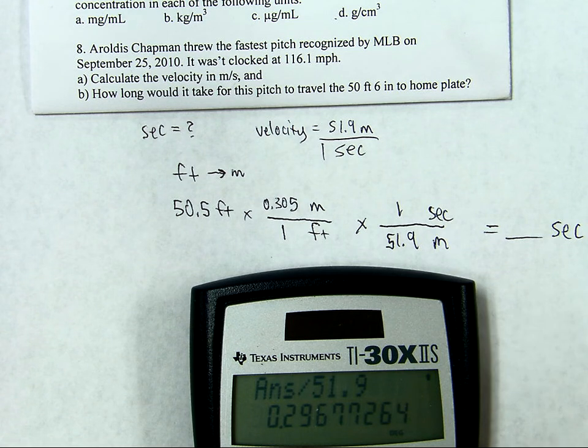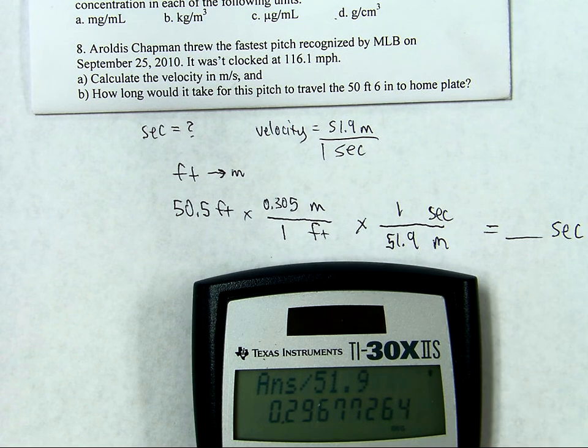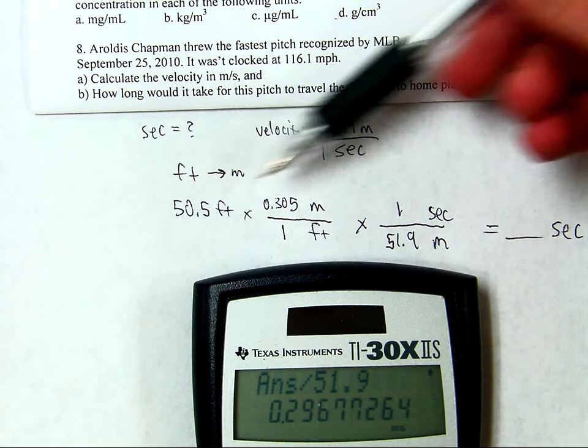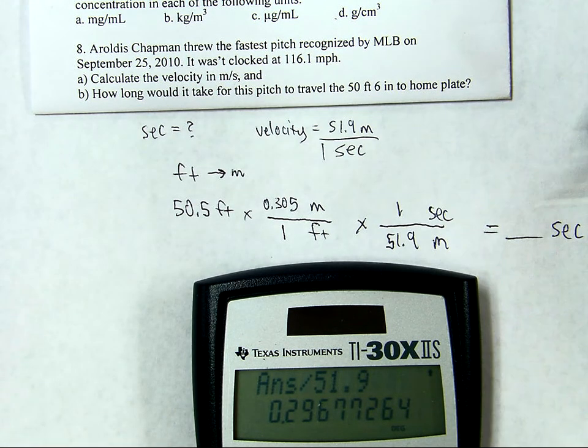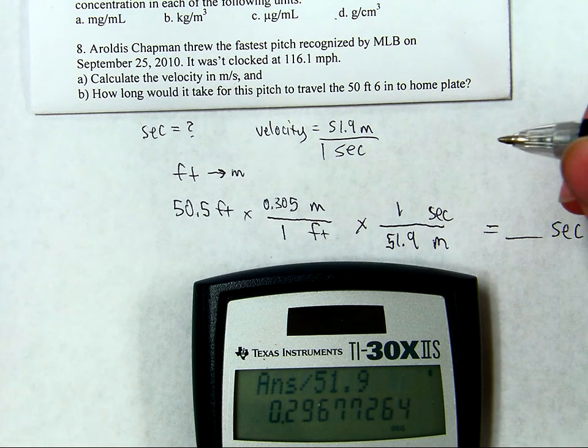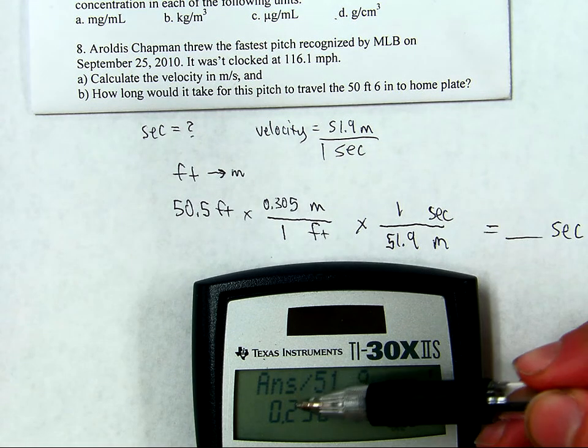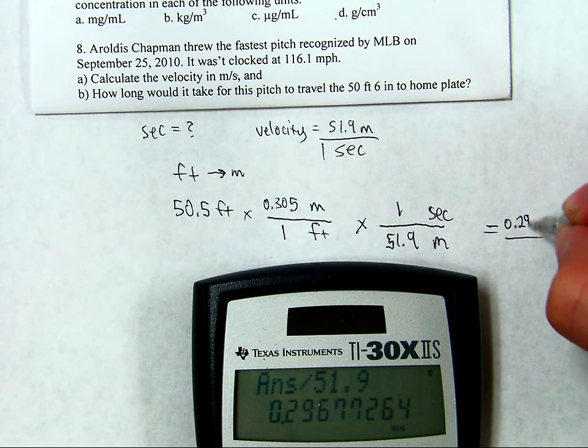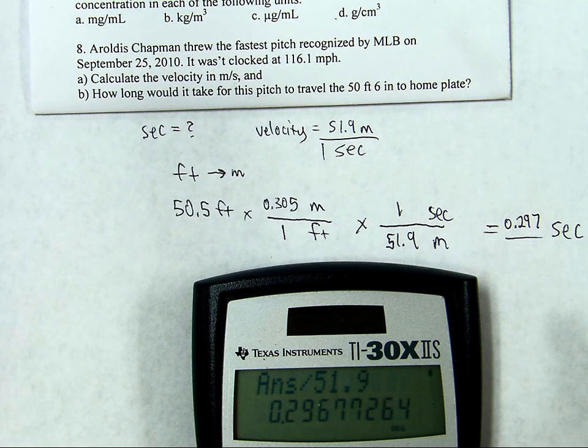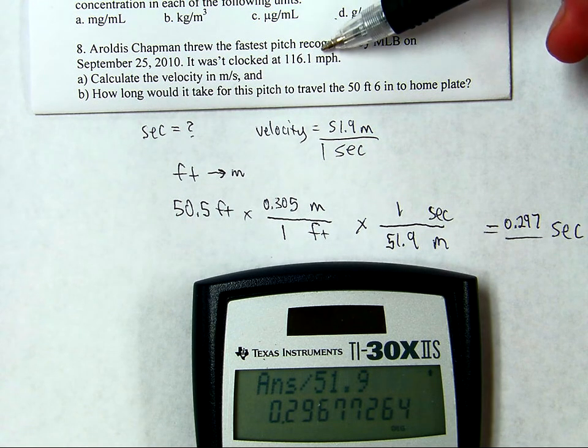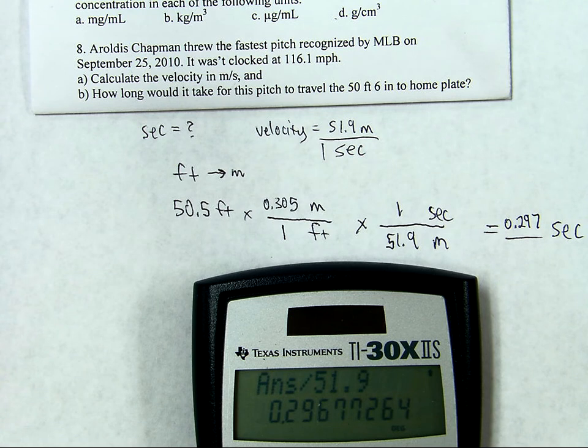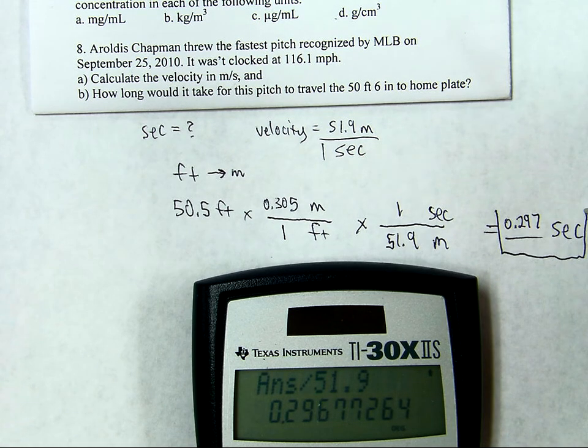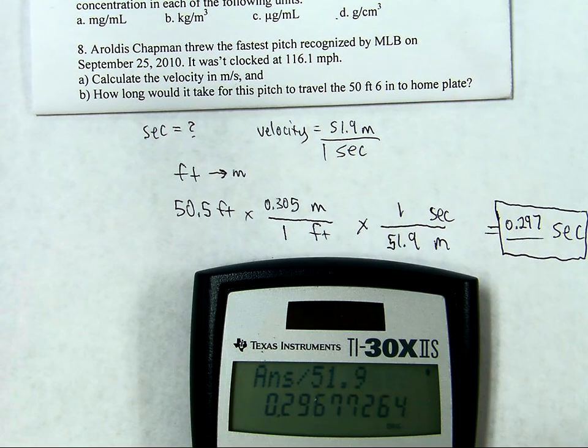And, once again, you've got to consider significant figures when you're rounding. So, in writing down your final answer, that was 3 sig figs, 3 sig figs, 3 sig figs. So, it's basically 3 significant figures all the way through. So, I'm going to round this to 0.297 seconds as the time it takes that ball at 116 miles an hour to travel the 50.5 feet from the pitcher's mound to the home plate. Let's box the final answer. And, that should do it.